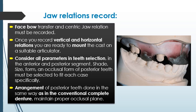Consider all parameters in teeth selection for the anterior and posterior segments: shade, size, form, and occlusal factors, including the occlusal form of posterior teeth, which must be selected to fit each case specifically. Arrangement of posterior teeth is done in the same way as in conventional complete denture construction, maintaining a proper occlusal plane.